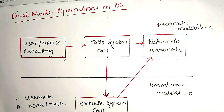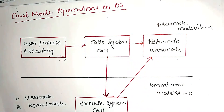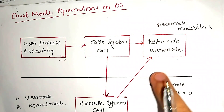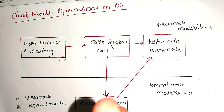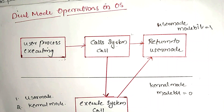When we execute the kernel service, the kernel module processes the request and then returns control back to the user mode. This is the overall process of dual mode operation.